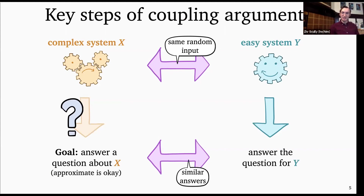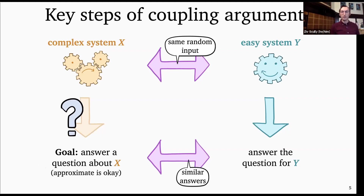To recap, the types of coupling arguments we're going to look at are ones comparing a complex system and an easy system, answering a question for the complex system through a three-step process: look at an easy system with the same random input, answer the question for the easy system, and then show that due to the shared random input, the easy answer is similar to the complex answer. We'll give an overview of many different types of coupling, classifying them according to different themes.